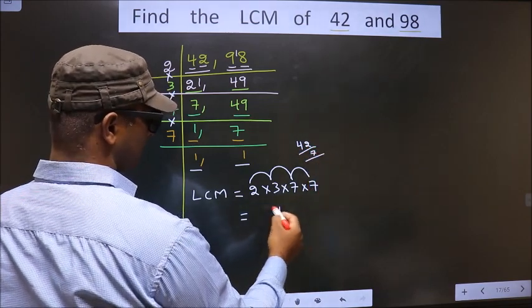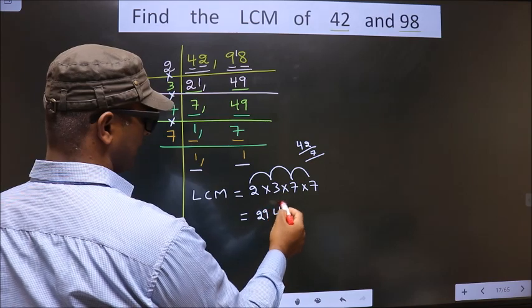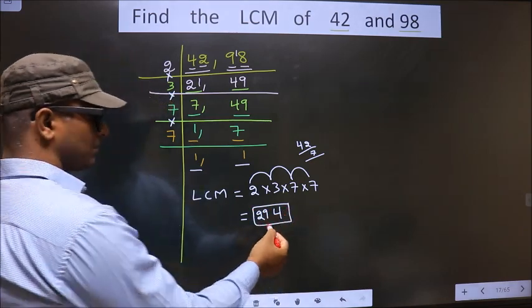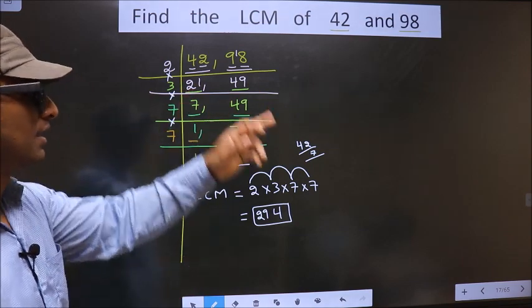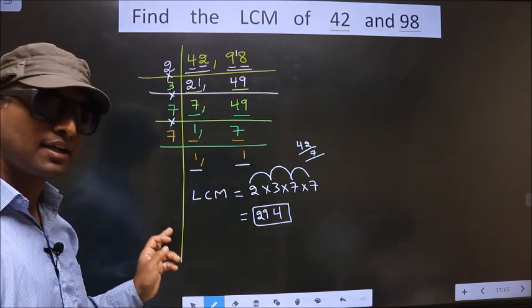7 times 2 is 14, 7 times 4 is 28, we get 294. This is our LCM. Am I clear?